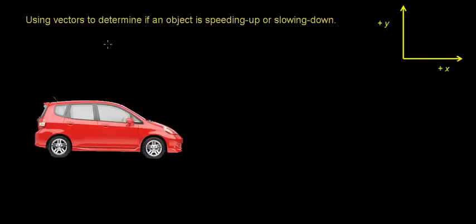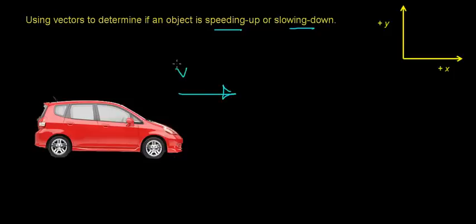In this video, we're going to learn how to use vectors in order to determine if something is speeding up or slowing down. This is going to be our coordinate system — we'll define the right direction as positive x and the up direction as positive y. Now suppose you have a car with an initial velocity in this direction, so I'm going to draw the velocity vector pointing in the positive x direction.